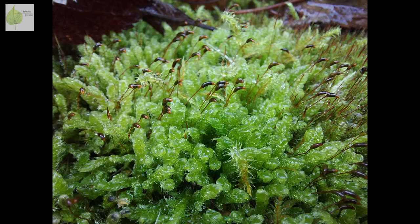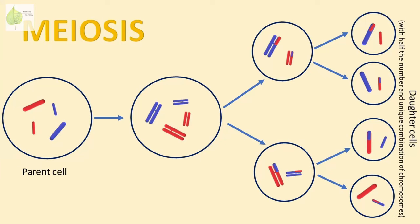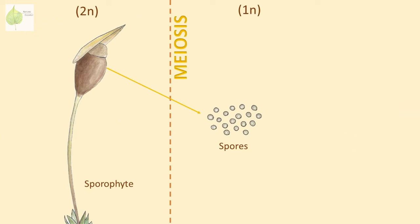Inside the spore capsule, spores are created by meiosis. During meiosis, the number of chromosomes is reduced by half, while at the same time the genetic material is recombined, resulting in numerous cells each of which has a unique combination of its parent's genetic material. This gets us back to the haploid part of the moss life cycle. At this point, you can already see how brief the diploid portion of the moss life cycle was.